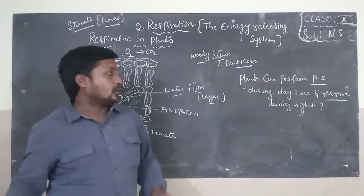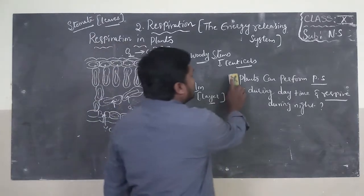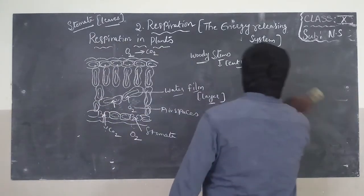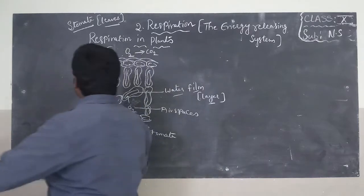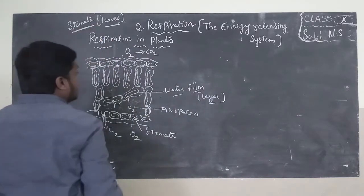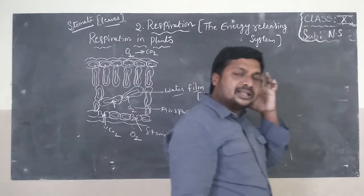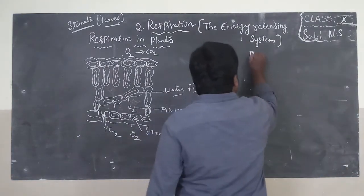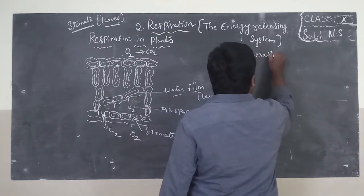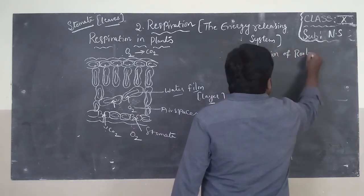Plants can perform photosynthesis and respiration simultaneously. This is about respiratory organs in leaves and stems. Leaves have special openings called stomata; stems have lenticels. Stomata and lenticels are the respiratory organs in plants. Now I will explain about aeration of roots.